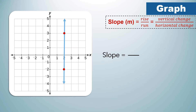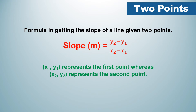What if the line is vertical? Whatever the value of the vertical change, since there is no horizontal change, the denominator will automatically be 0. And in mathematics, if you have a denominator of 0, the number is undefined. Therefore, the slope of a vertical line is undefined. Let us now proceed in finding the slope of a line given two points.